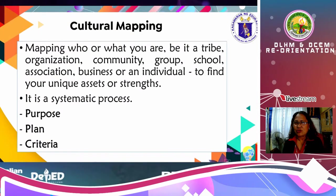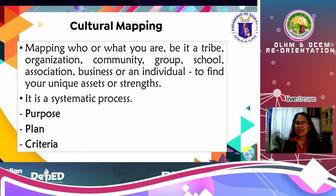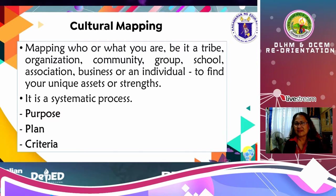In the contextualization, you have to look back into cultural mapping — mapping who and what you are, be it a tribe, organization, community, group, school, association, business, or individual — to find your unique assets or strengths. It is a systematic process. You need to have your purpose, your plan, and your criteria.